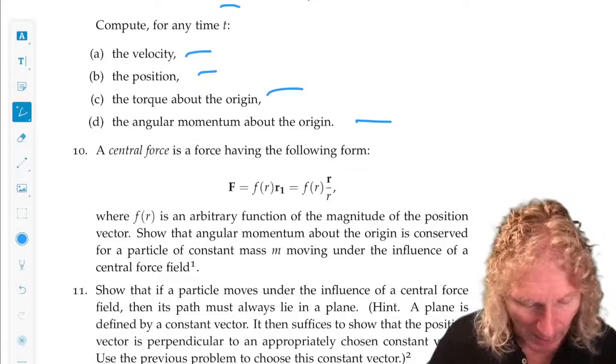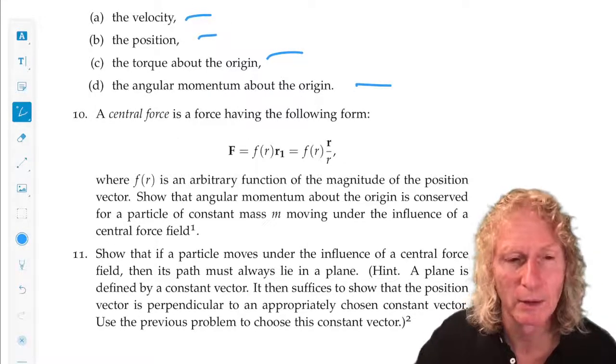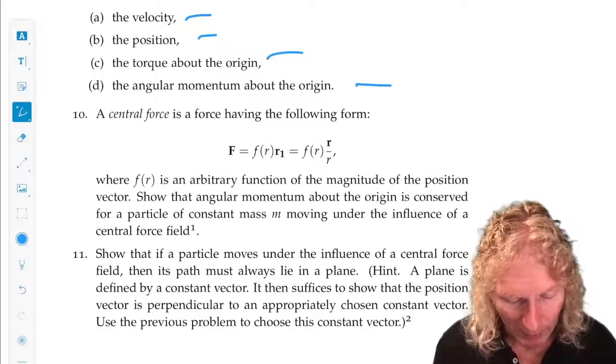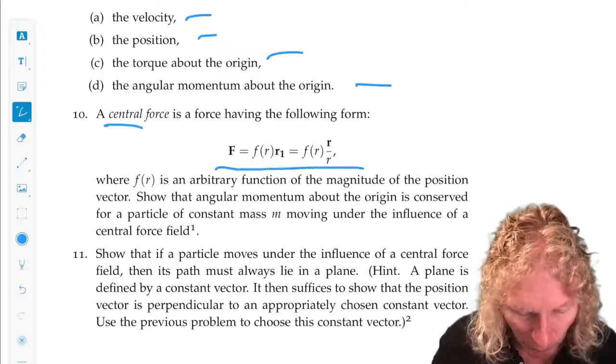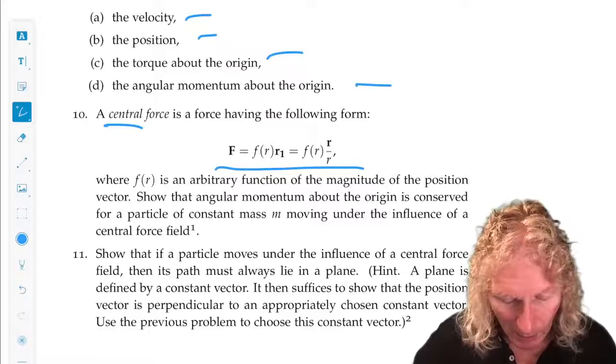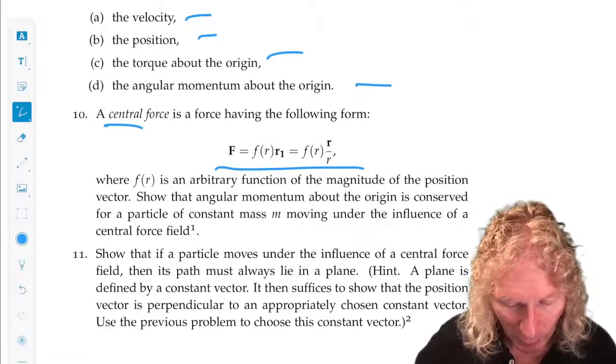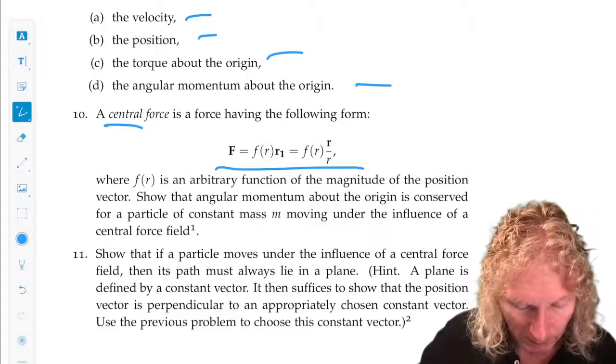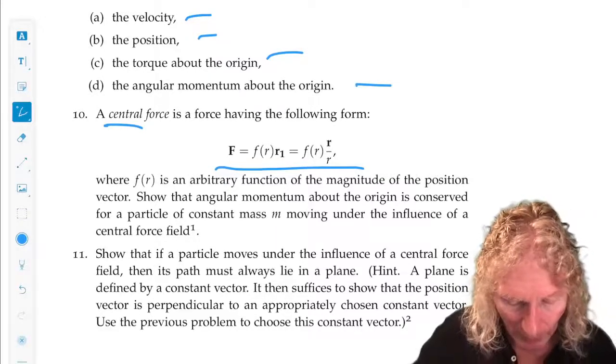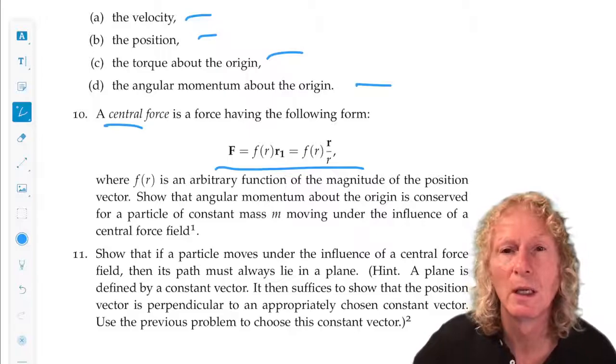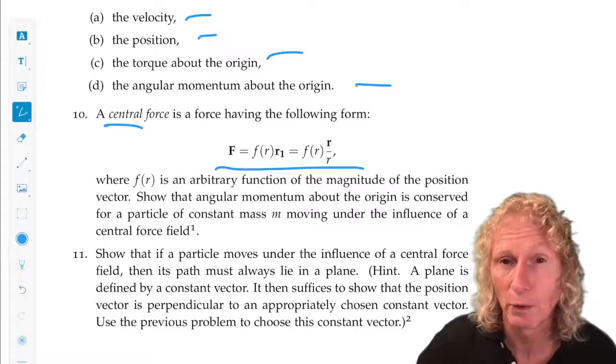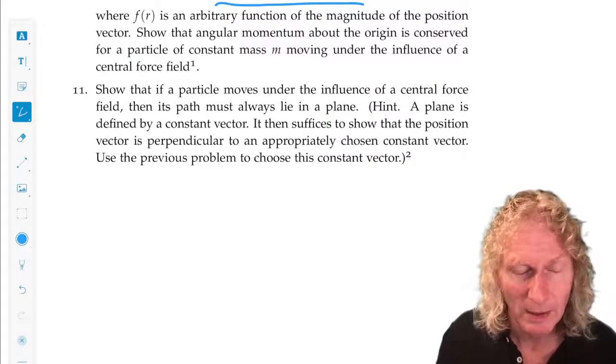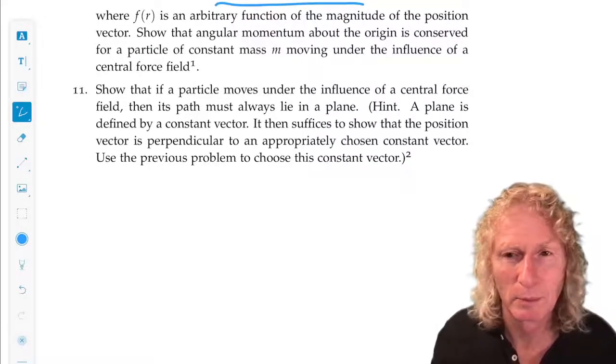All right, now, problems 10 and 11 are setting you up for the next chapter. I define what is meant by a central force and I want you to show that the angular momentum about the origin is conserved for a particle of constant mass moving under the influence of a central force. Okay, I mean, that's a cross product thing.